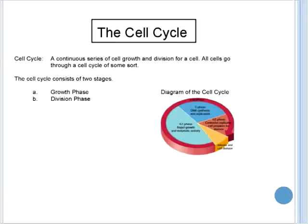By definition, the cell cycle is a continuous series of cell growth and divisions for a cell. All cells go through a cell cycle of some sort. The cell cycle consists of two distinct stages, that being a growth phase and a division phase.